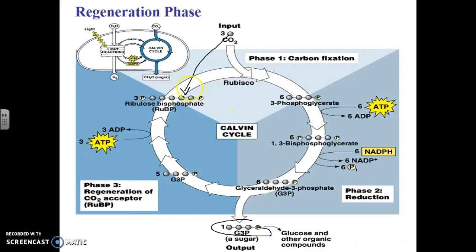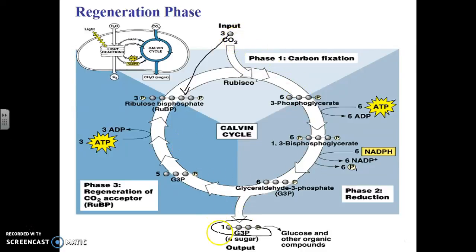At this point, we actually haven't made glucose — we've only made one G3P, or half of glucose. So this reaction has to happen again, adding three more carbon dioxides, going through the whole cycle again, and generating another G3P. Those two G3Ps, since they're both half glucose molecules, will bond together to create glucose. The carbon cycle has to occur twice — they call it a double cycle — each cycle taking in three carbon dioxides. That makes sense because glucose is a six-carbon molecule, requiring six carbon dioxides total.